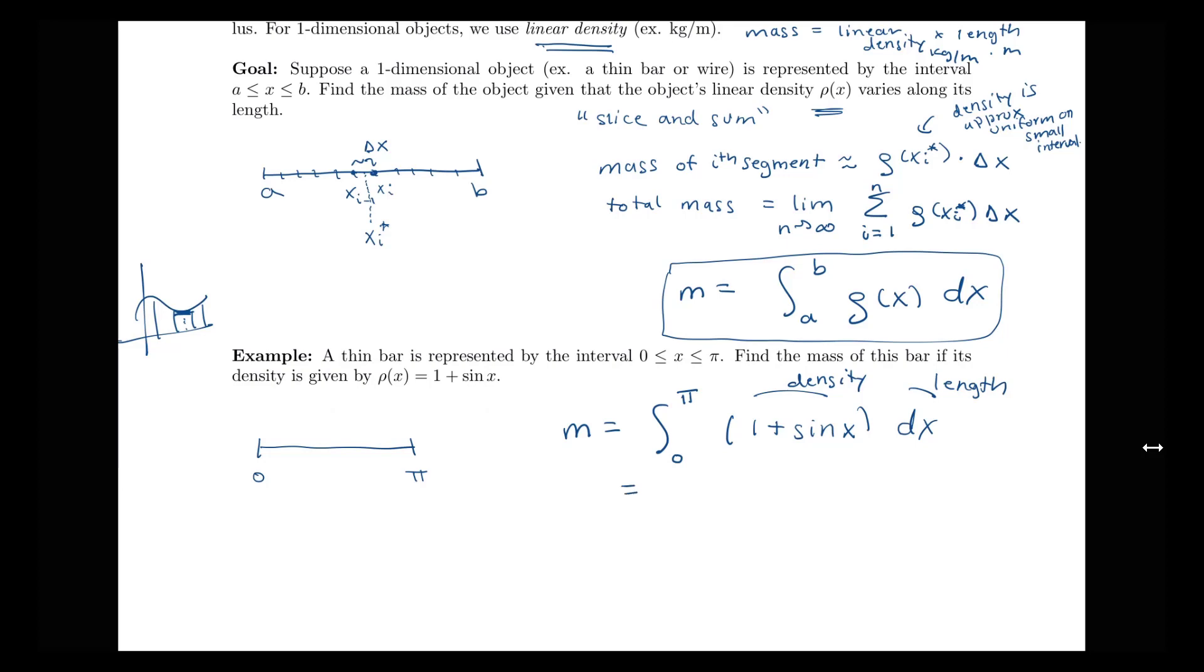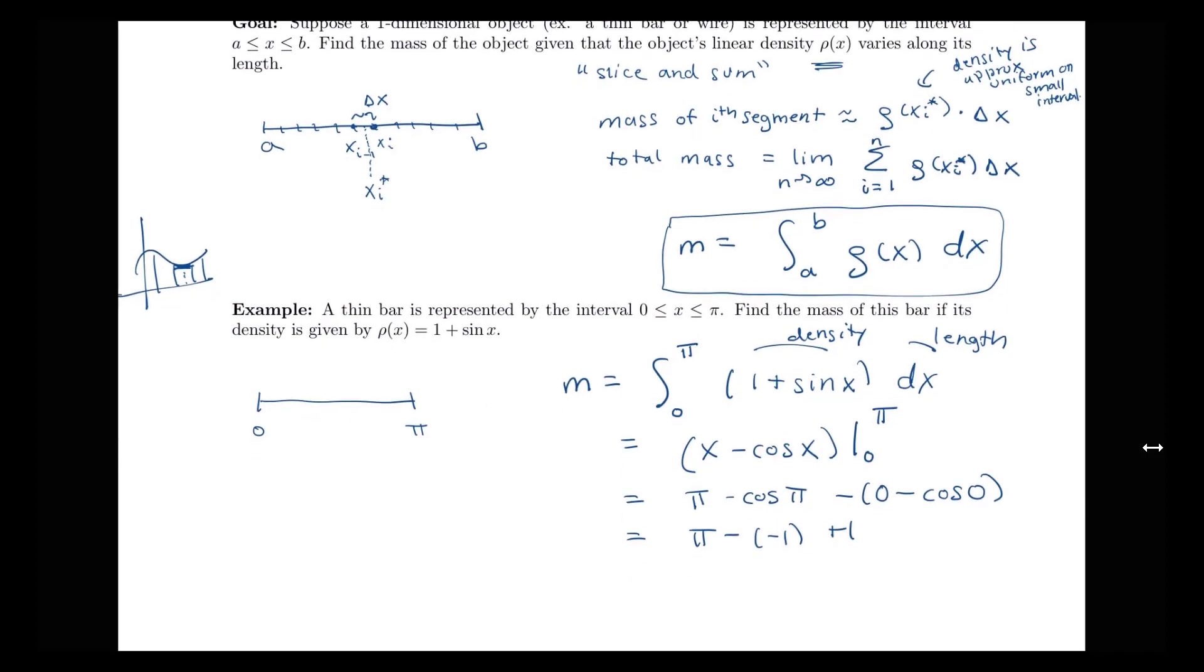So integrating this, we have x minus cos(x), since the derivative of cosine is negative sine, evaluated from zero to π. So plugging in our bounds here, we have π minus cos(π) minus zero minus cos(0). We know that cos(π) is negative one, and cos(0) is one. So we end up with our mass here being equal to π + 2.